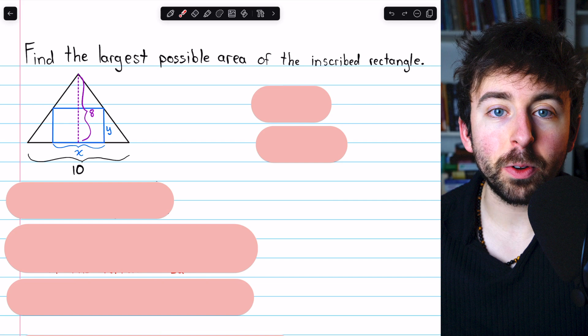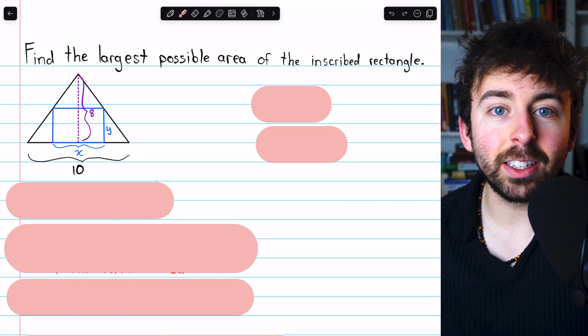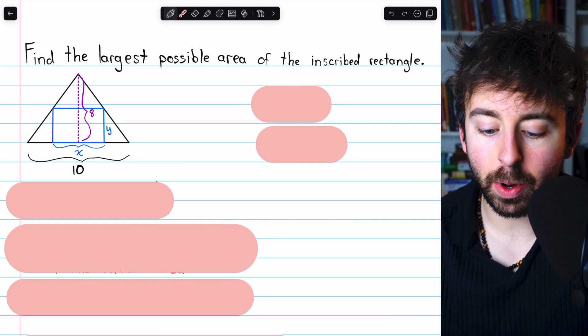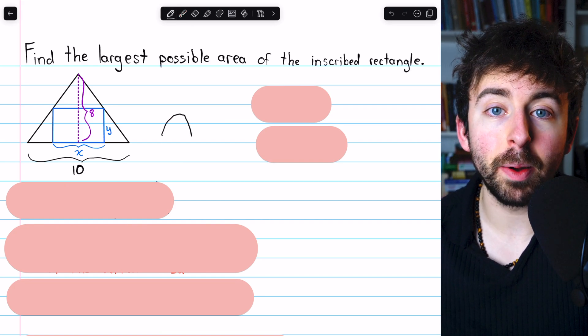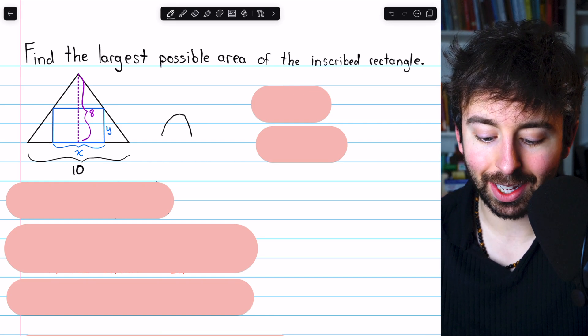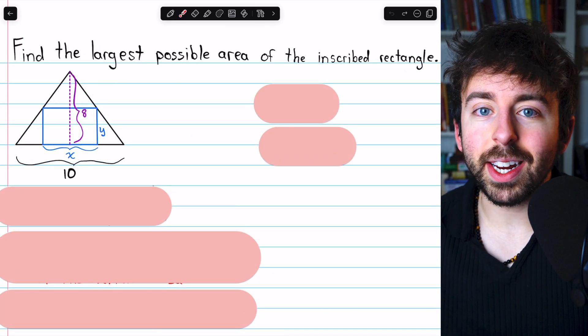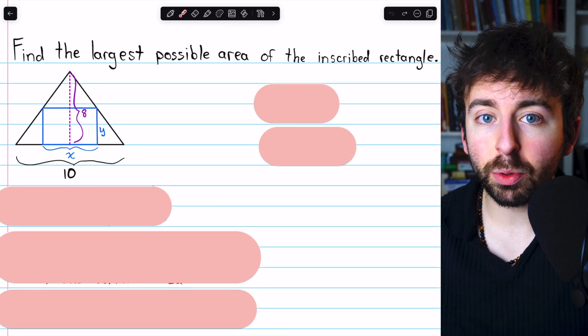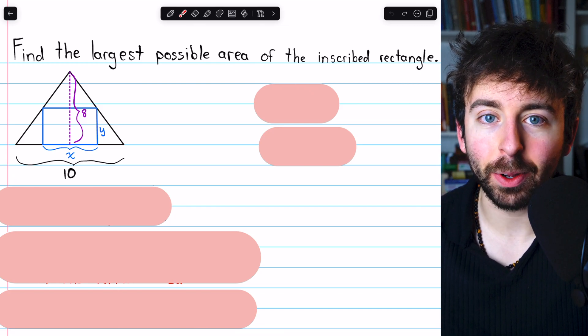If you want to try this out yourself, my hints are to use similar triangles and to write an expression for the area of the rectangle, and then recall that the maximum point on a downwards facing parabola is the vertex. This is a sort of problem you would encounter in calculus, but just with some geometry and algebra, we're going to be able to solve this without calculus.